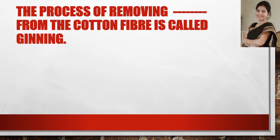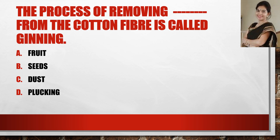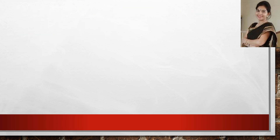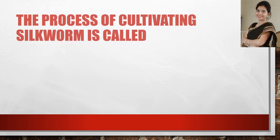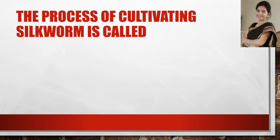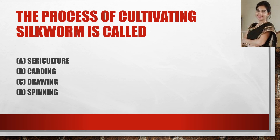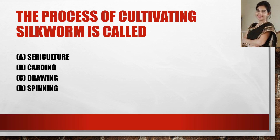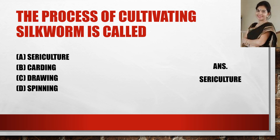The process of removing dash from cotton fiber is called ginning. The answer for what is removed is seeds. Now the next question: the process of cultivating silkworm is called — and the answer is sericulture.